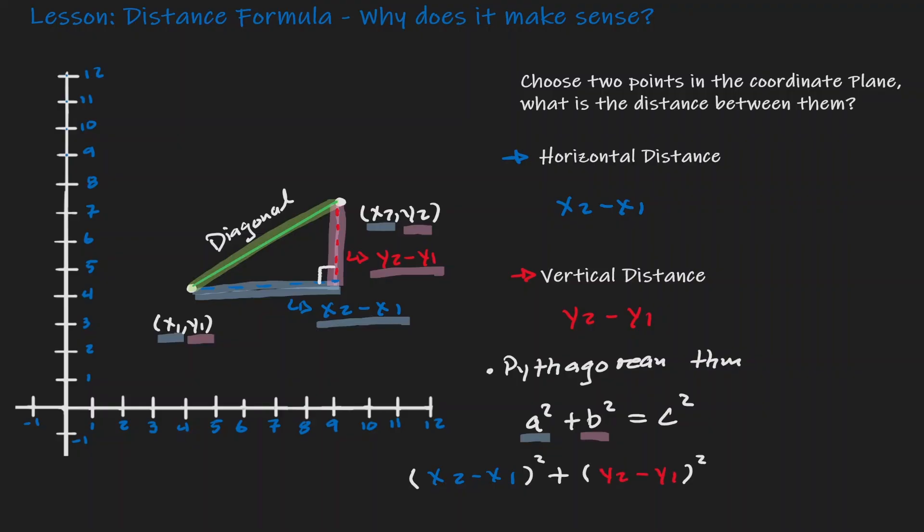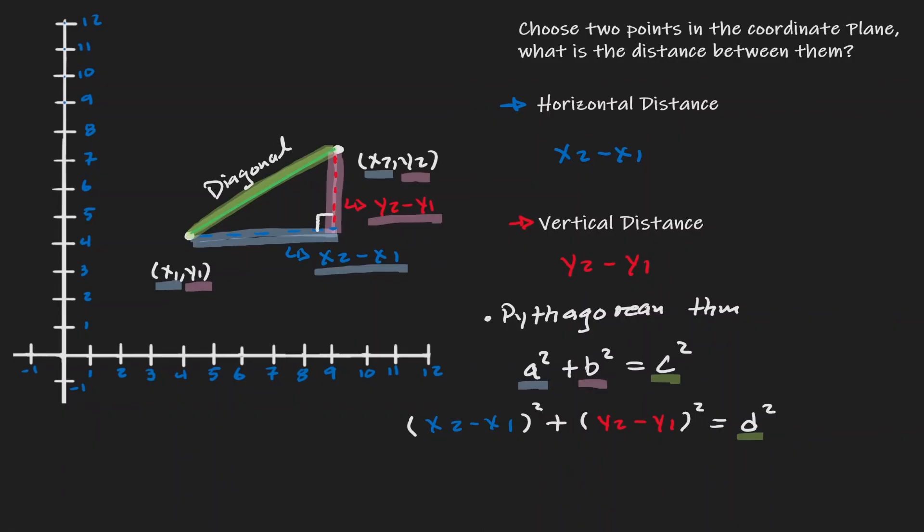And that is equal to the hypotenuse square. But notice that the hypotenuse is the actual distance of those points. So I'm going to call that d square. And if that's the case, then notice that now we can solve for d. We can take the square root on the right, and we can take the square root on the left. That way the squares are going to cancel out.